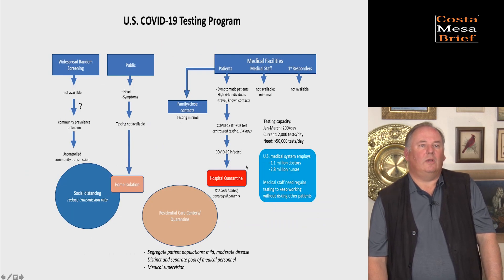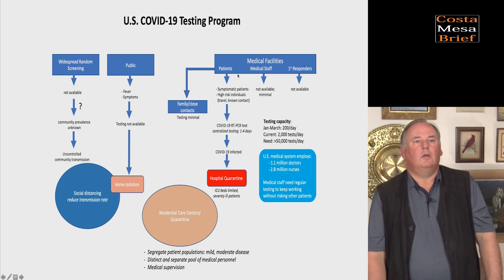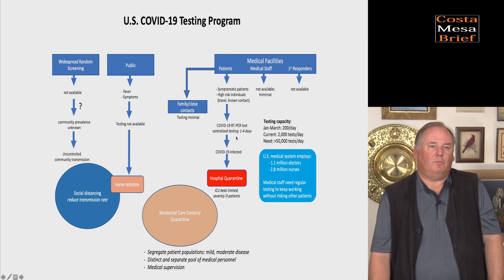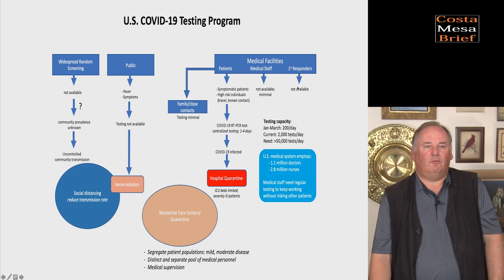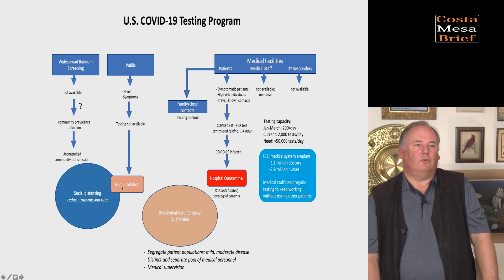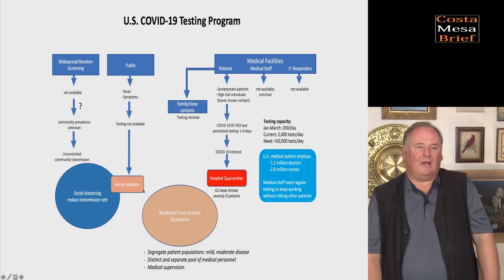In contrast, the United States has a different problem because of the slow rate of testing. At the moment, only patients who are symptomatic, at high risk, have traveled, or have known contacts with positive patients are tested. Testing takes between one and four days before answers come back. We're not testing families and close contacts routinely, not testing medical staff, not testing first responders, and not testing the public for surveillance to monitor spread. So we're basically flying blind. That's why social distancing and, if you're sick, home isolation are so critical.